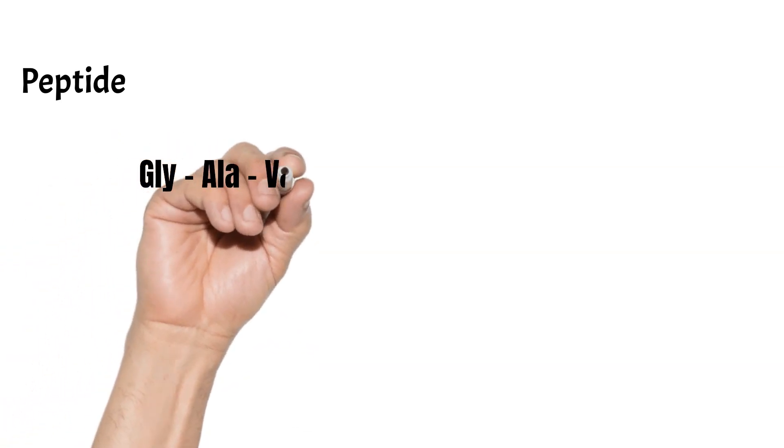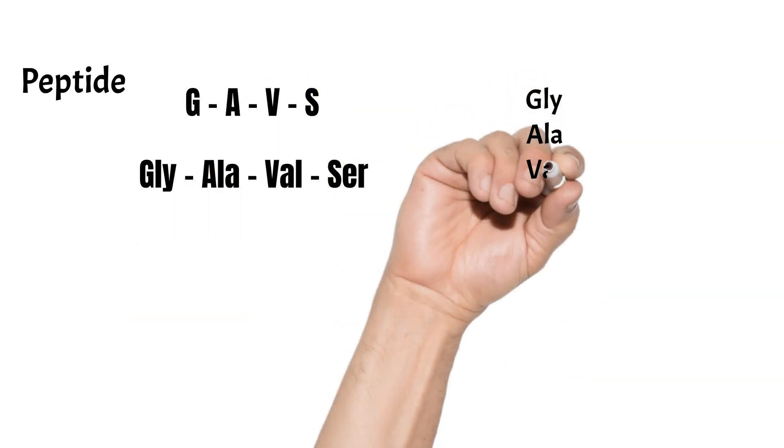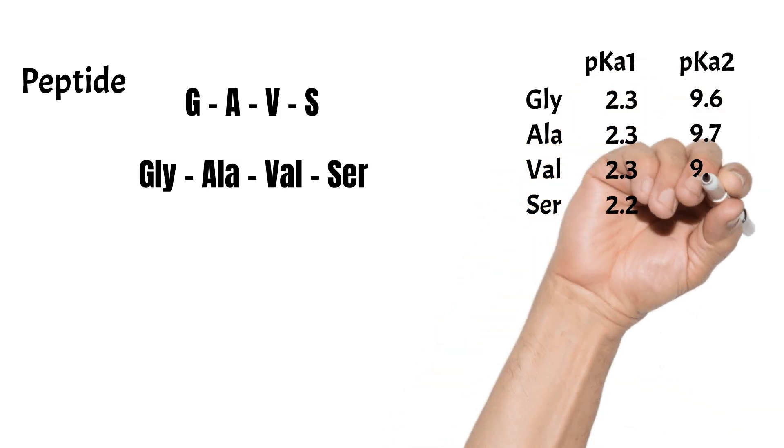What about calculating pI value for a peptide? Let's take this tetrapeptide as an example. Each amino acid has pK1 and pK2, so which two pK values do we need to use?